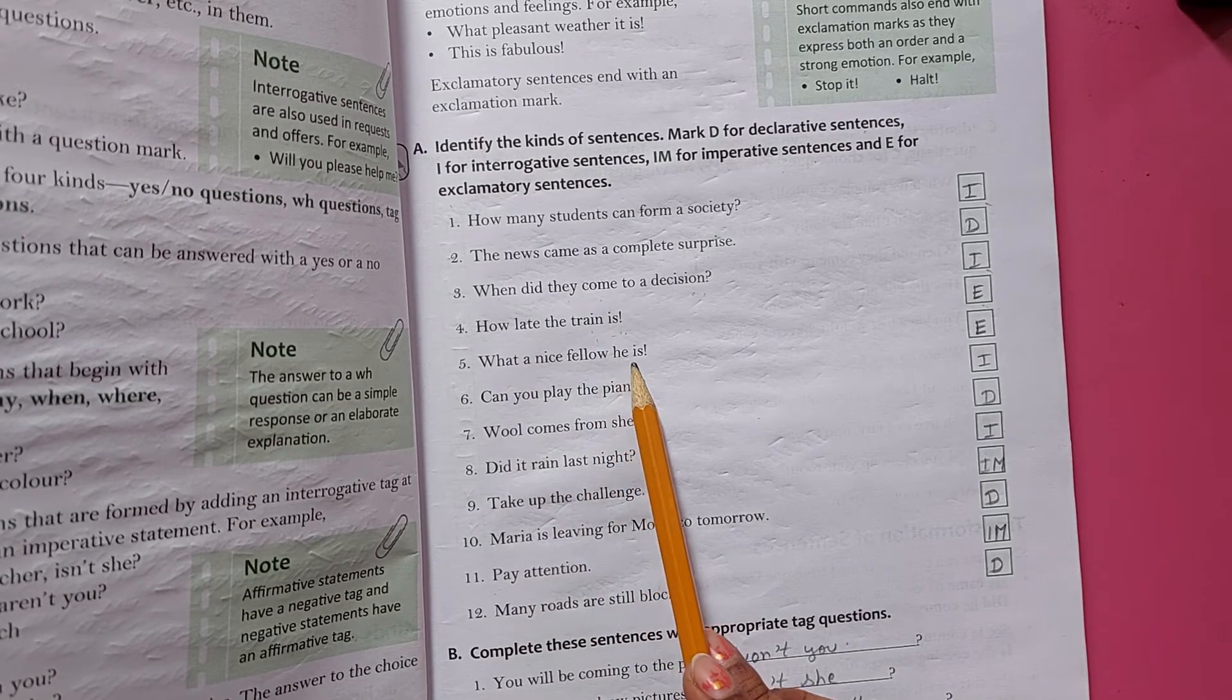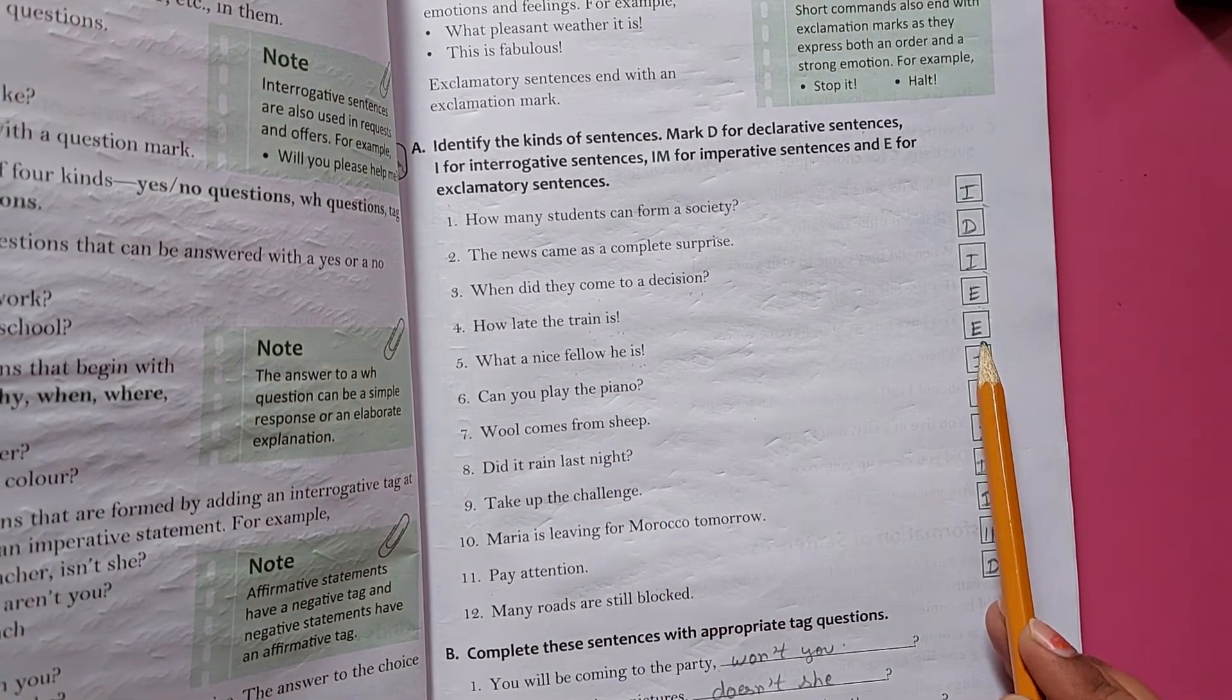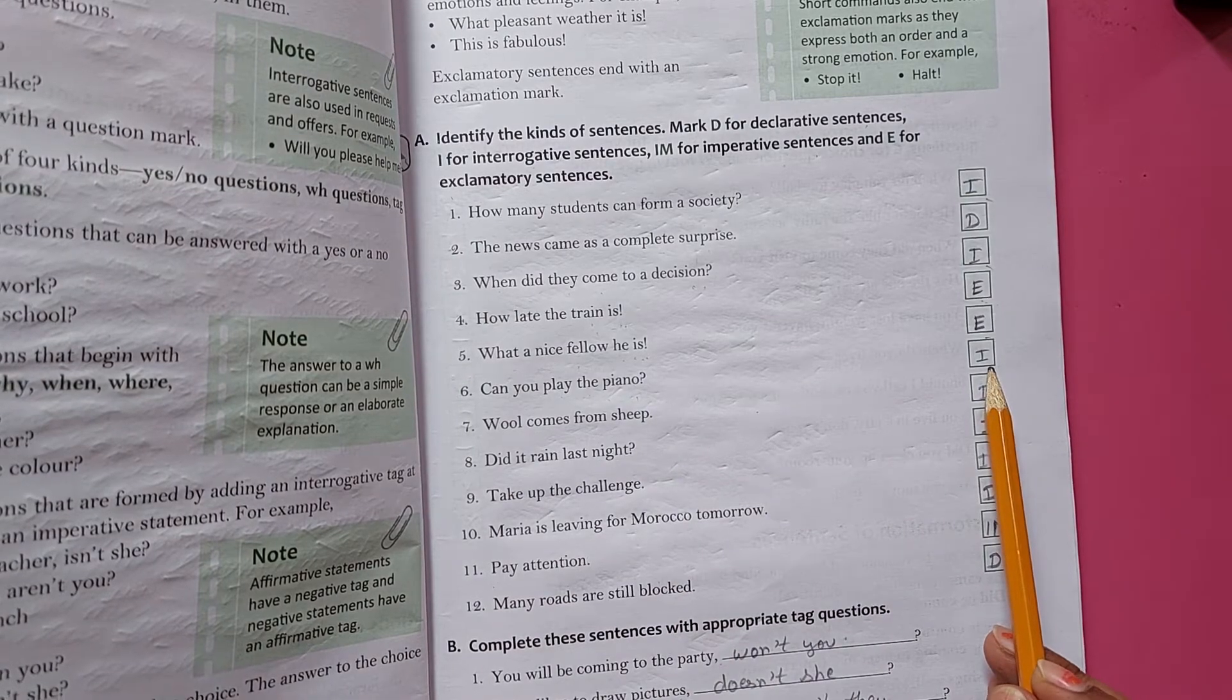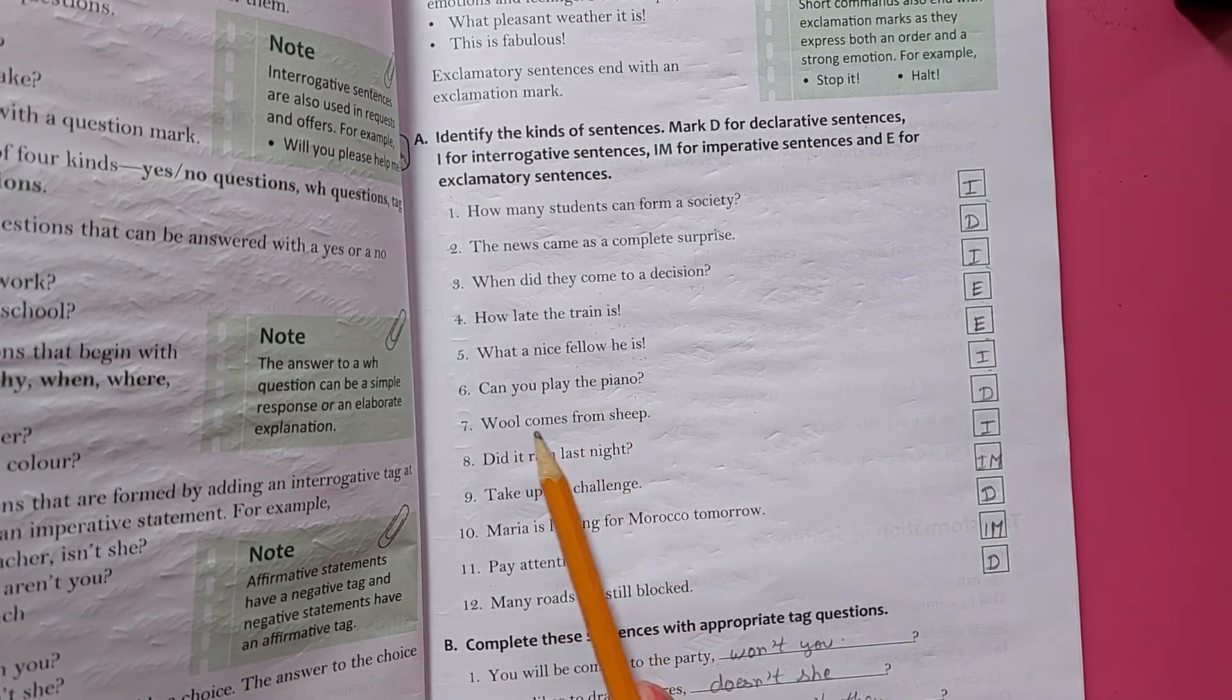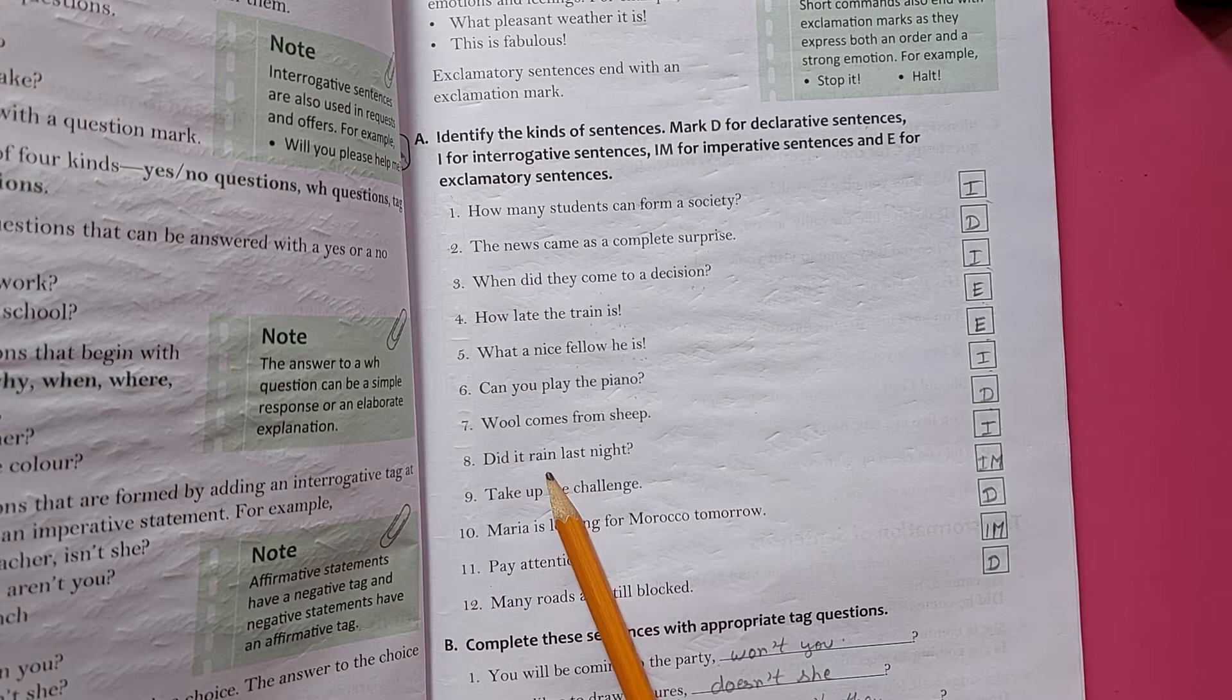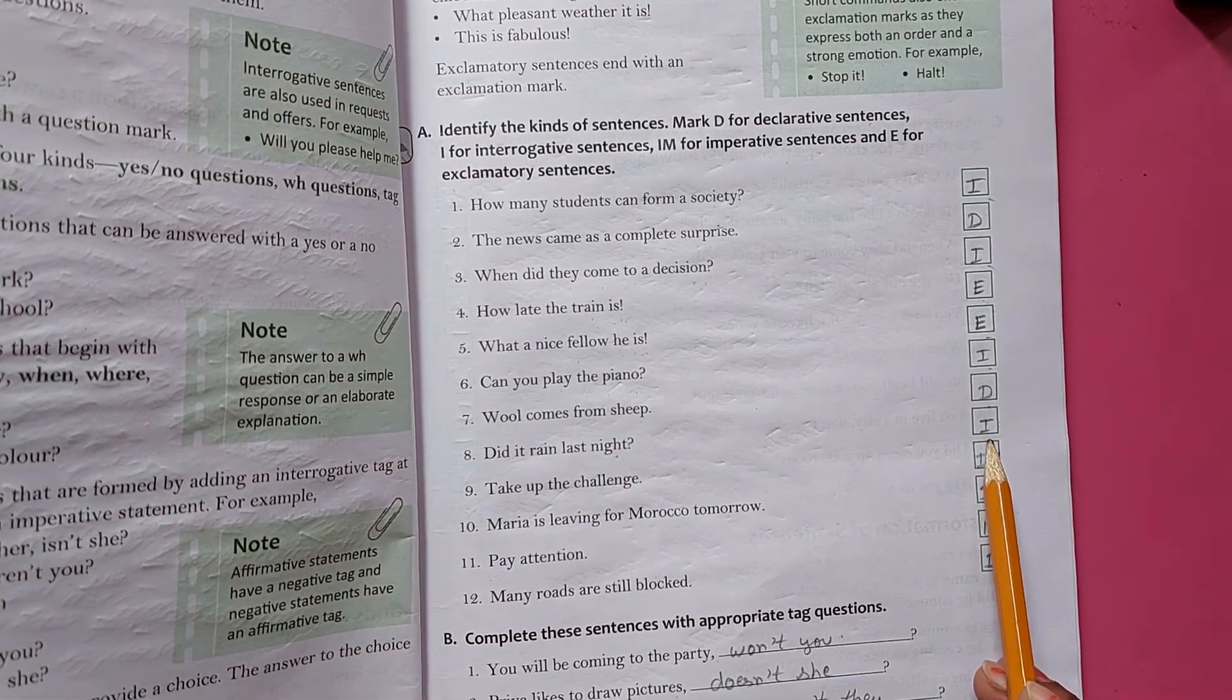What a nice fellow he is. Usme bhi exclamatory ka mark pard gya. Toh isme bhi kya aagya? Hamaara E. Can you play the piano? Question form aagyi. Toh yeh hummara interrogative. Wool comes from sheep. Yeh hummye bata raha hai, toh yeh hummara declarative. Did it rain last night? Yeh question form hai, toh yeh hummara interrogative.